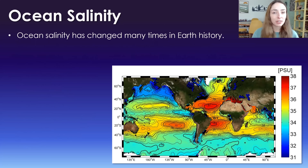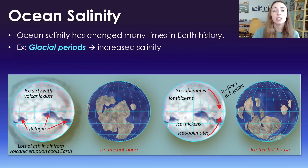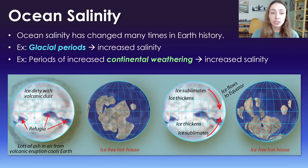Ocean salinity has also varied temporally through Earth's history. For example, during glacial periods versus non-glacial greenhouse periods — when glaciers and ice have spread, they take up a lot of fresh water, which increases the leftover water's salinity. Additionally, periods of increased continental weathering also increase salinity because more continental weathering means more input of salt ions to the ocean.